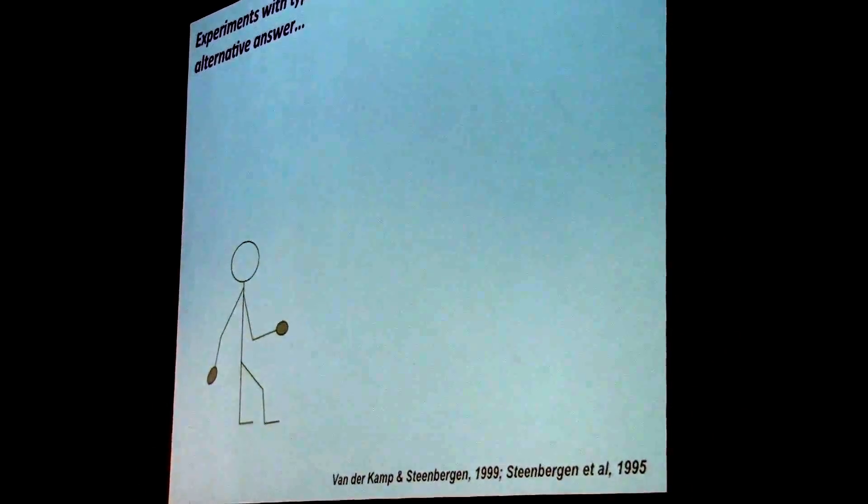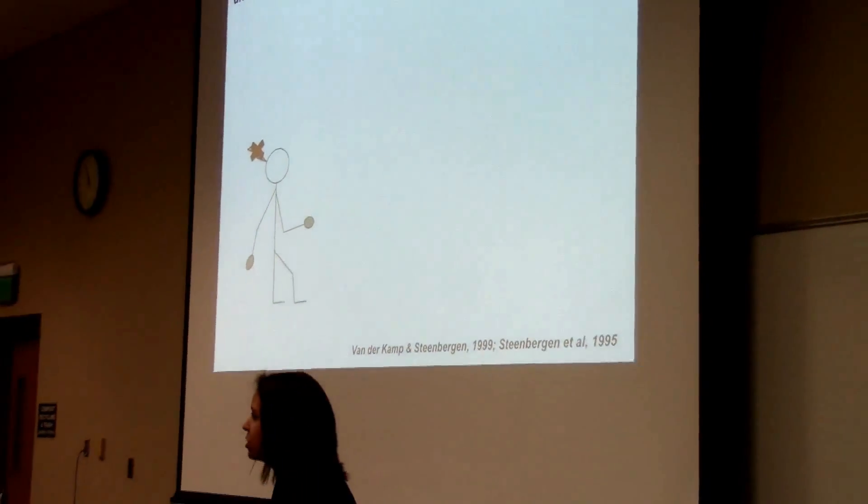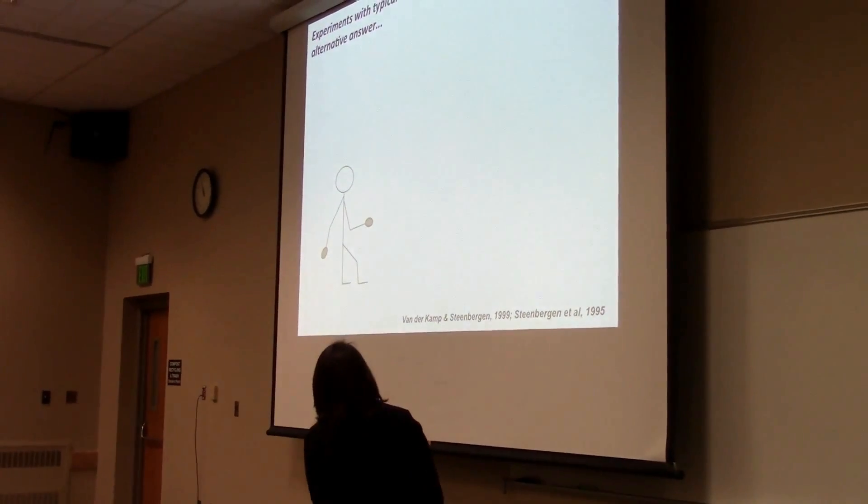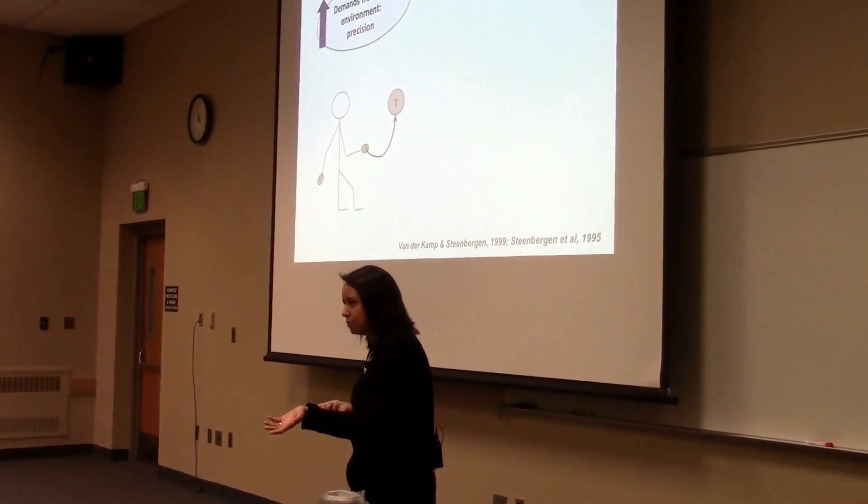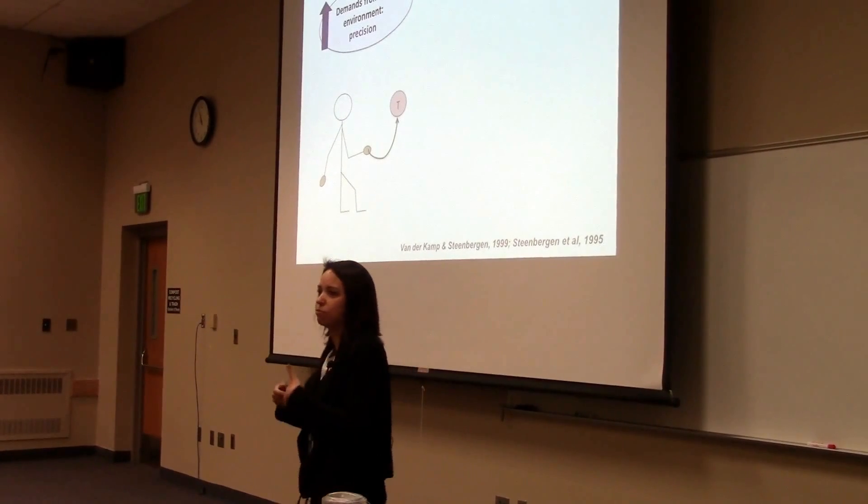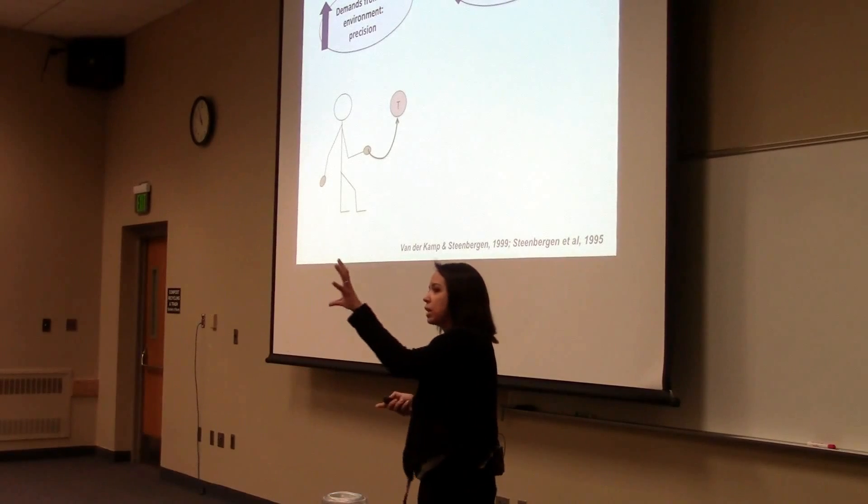Experiments with typical adults, with absolutely no brain injury, give us some direction into an alternative answer. So these individuals, when performing a task such as reaching a target, and when they are challenged, when high precision requirements are involved, or when their action capabilities are reduced, they are forced to use their non-preferred limb.